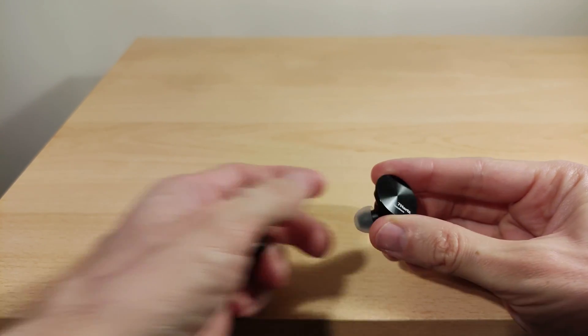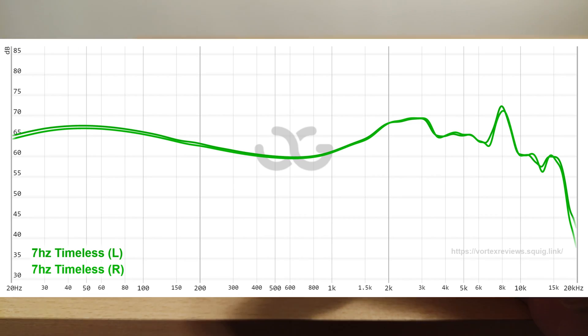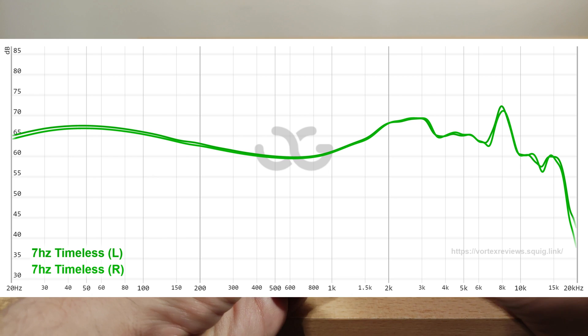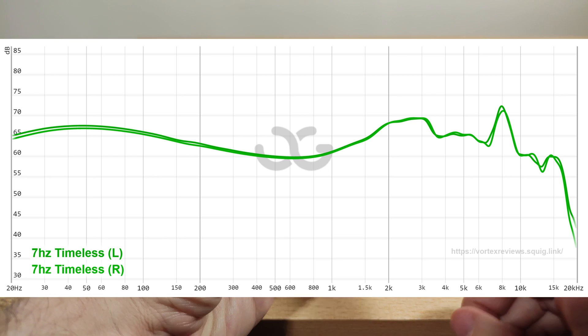Now I'm going to overlay a graph, and this is both sides because some people have said the channel matching is not that great, but as you can see mine is not too bad. Also bear in mind on the graph, my sub-bass roll-off below 50, 60, 50, 40 hertz starts to roll off. Other people's don't do that.